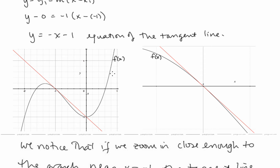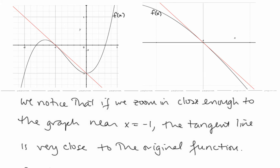Here's the graph of our curve f of x and the tangent line at x equals negative 1. Notice that if we zoom in really close near x equals negative 1, the function and the tangent line aren't very different. So we could use the tangent line to approximate function values at x values near x equals negative 1, and that's what linear approximations and differentials are all about.